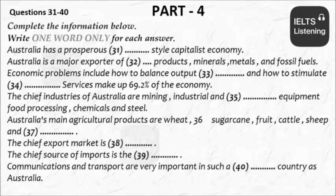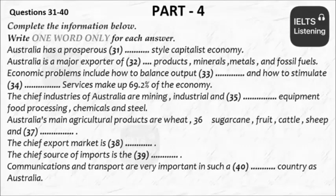Australia's main agricultural products are wheat, barley, sugarcane, fruit, cattle, sheep, and poultry. Our chief export market is Japan, which takes 24% of our exports. After that, South Korea takes 8%, and New Zealand and the U.S. each take 7%. In years to come, however, we expect China to become a significant trade partner. China already supplies 5% of Australia's imports — the same amount as New Zealand.